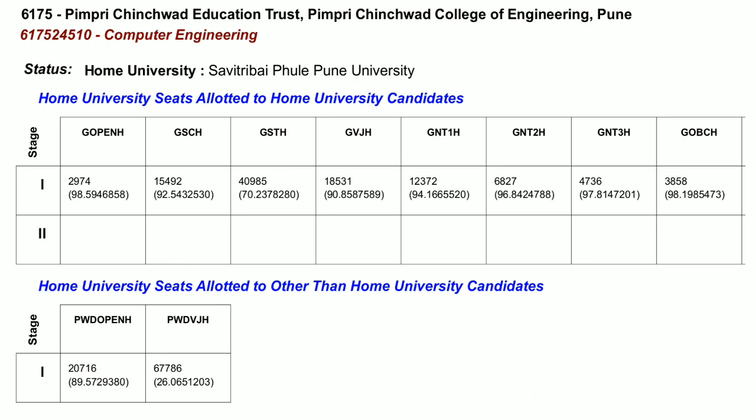Home university seat allotted to other than home university candidate. Physically handicapped open category state merit list number closed at 20760. Physically handicapped VJ candidate, state merit list number closed at 67786.